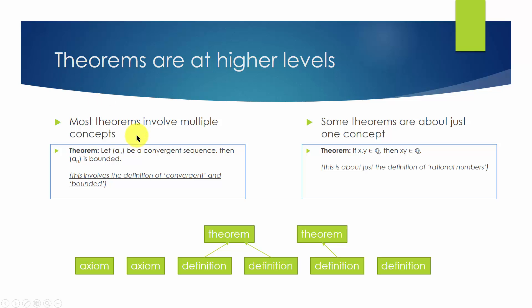Some theorems might be just about one concept, such as this one. It says, if both x and y are rational numbers, then x times y is also a rational number. Proving this theorem would involve just one concept, the definition of rational numbers.